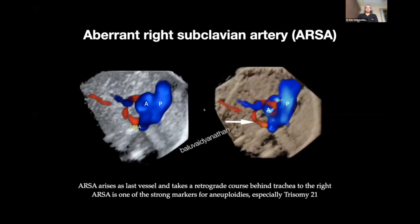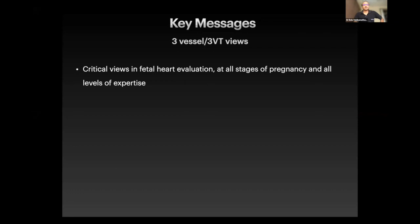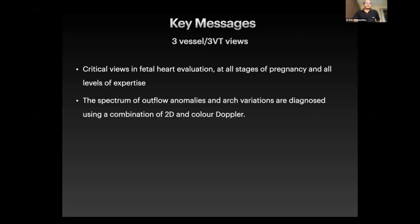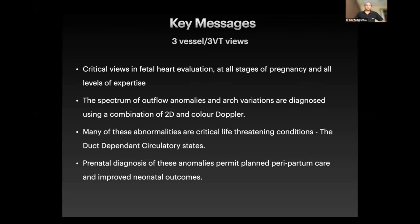ARSA is a strong marker for aneuploidy, particularly trisomy 21. So whenever you perform screening and find a marker like an echogenic focus, it is important to complete the 3VT view and look for ARSA. It is a critical view in fetal heart evaluation at all stages of pregnancy and all levels of expertise. The spectrum of outflow and arch anomalies are diagnosed using a combination of 2D and color — many are life-threatening but correctable, and prenatal diagnosis permits planned care and improved newborn outcomes.